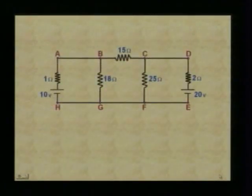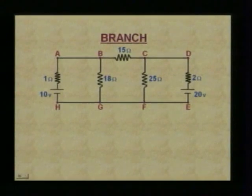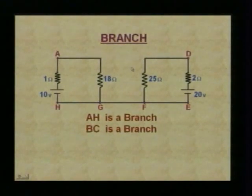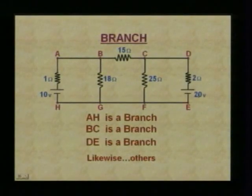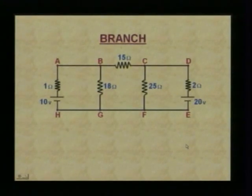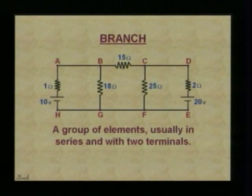Let us look at this circuit. What do you mean by a branch? A-H is a branch, B-C is one branch, and D-E is another branch. A group of elements usually in series and with two terminals is defined as a branch. This is an element which has got two terminals — this is what we mean by a branch.